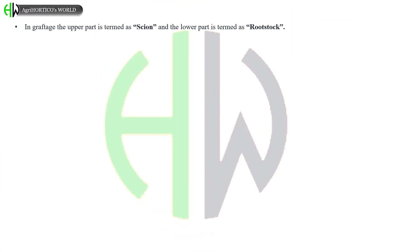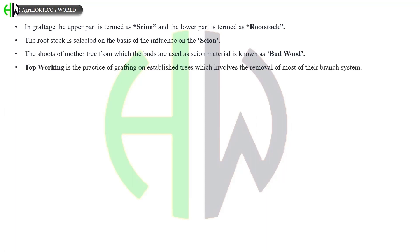In graft, the upper part is termed as scion and the lower part is termed as root stock. The root stock is selected on the basis of the influence on the scion. The shoots of mother tree from which the buds are used as scion material is known as bud wood. Top working is the practice of grafting on established trees which involves the removal of most of their branch system. It is done to rejuvenate old unproductive tree. A scion is grafted over the already grafted shoot is known as double working. It is done to temper the influence of the root stock.